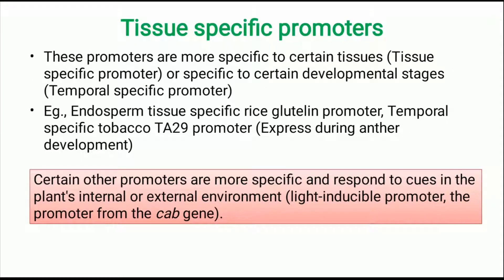Tissue specific promoters are more specific to certain tissues and organs of the plant, and also specific to certain developmental stages of the plant. If it is specific to a developmental stage, it is called a temporal specific promoter. If it is specific to a certain part of the plant, it is called a tissue specific promoter. An example is the endosperm tissue specific rice glutelin promoter, and the temporal specific tobacco TA29 promoter expressed during anther development. Certain other promoters respond to cues in the plant's internal or external environment, such as light and temperature.